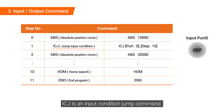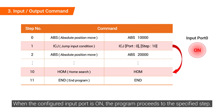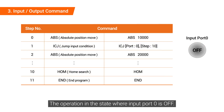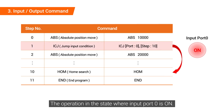ICJ is an input condition jump command. When the configured input port is off, the next step is executed. When the configured input port is on, the program proceeds to the specified step. This describes the operation when input port 0 is off and when input port 0 is on.